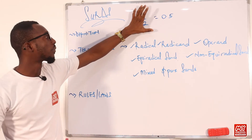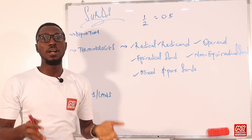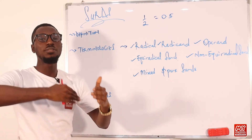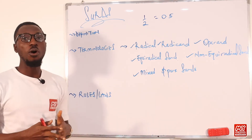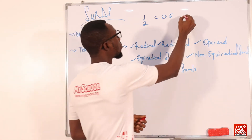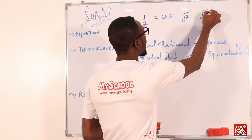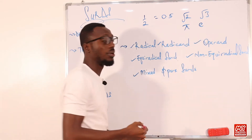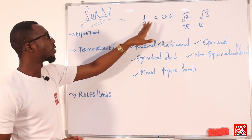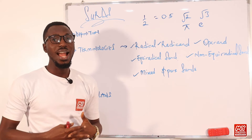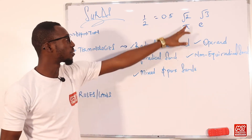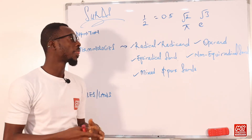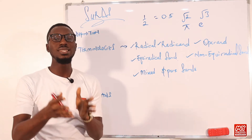An irrational number is the complete opposite: you cannot express it as a fraction, and its decimal form doesn't have an exact value. The only way to get a usable value is to approximate — it's never-ending and not following a repeated pattern. Examples of irrational numbers include root 2, root 3, root 5, root 7, and values like pi and Euler's number. So we can define a surd as an irrational number or irrational root, because when you try to find these roots what you get is an irrational number.